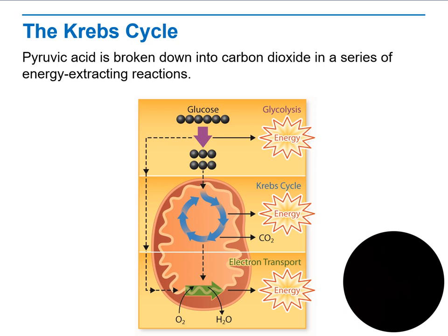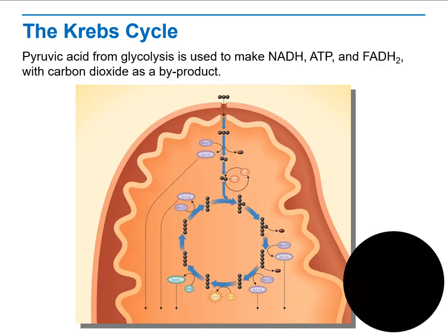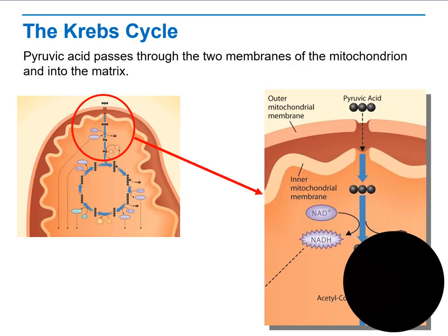In the Krebs cycle, pyruvic acid is broken down into carbon dioxide. This is a series of steps that convert energy through an energy-extracting reaction, as you can see in this photo. Pyruvic acid from glycolysis is used to make NADH, ATP, FADH2, and carbon dioxide as a byproduct. Pyruvic acid passes through the two membranes of the mitochondria and then goes to the matrix.